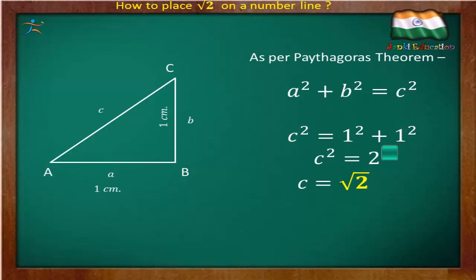We have the measurement for a² and b². That means c² is equal to 1² + 1². So c² = 2, and c is equal to √2. That is the value of side c, the hypotenuse. Hence AC is √2. This way we get the value of √2.